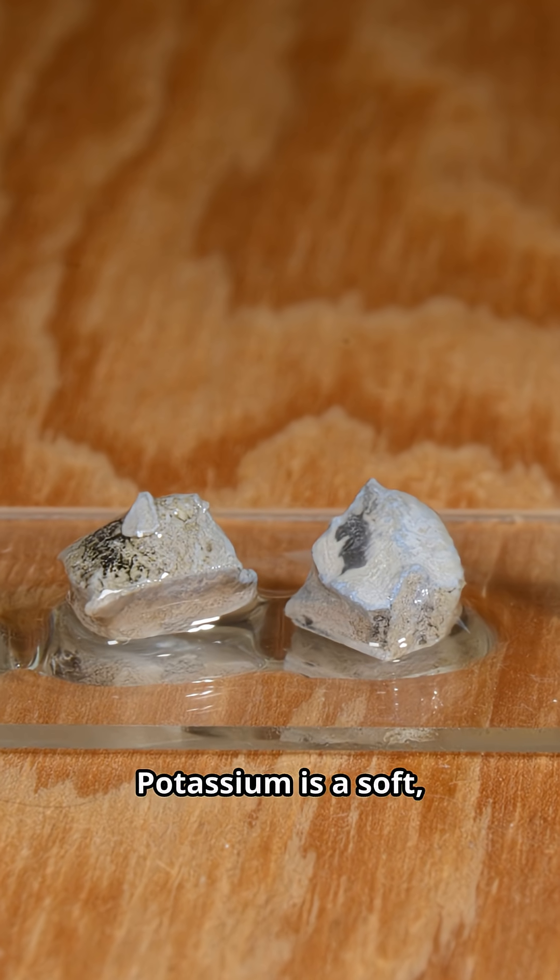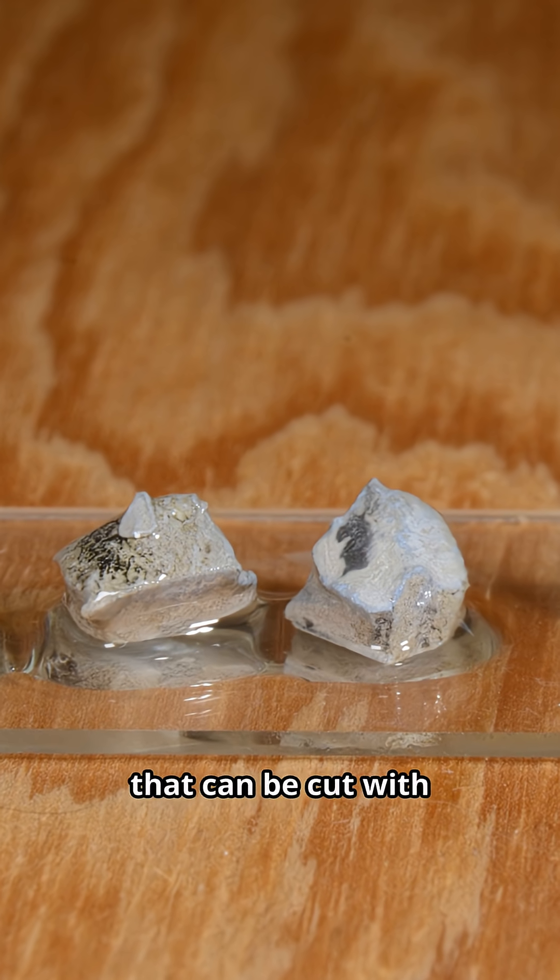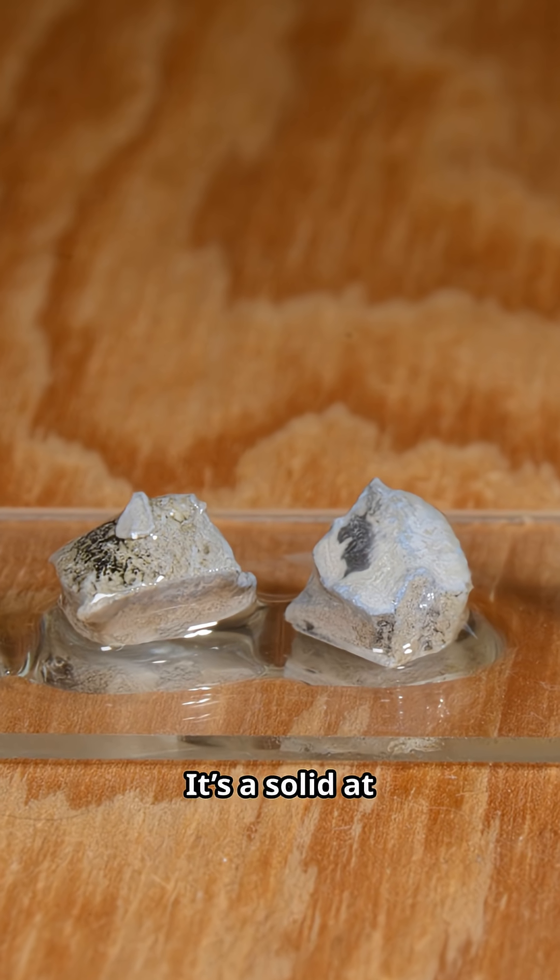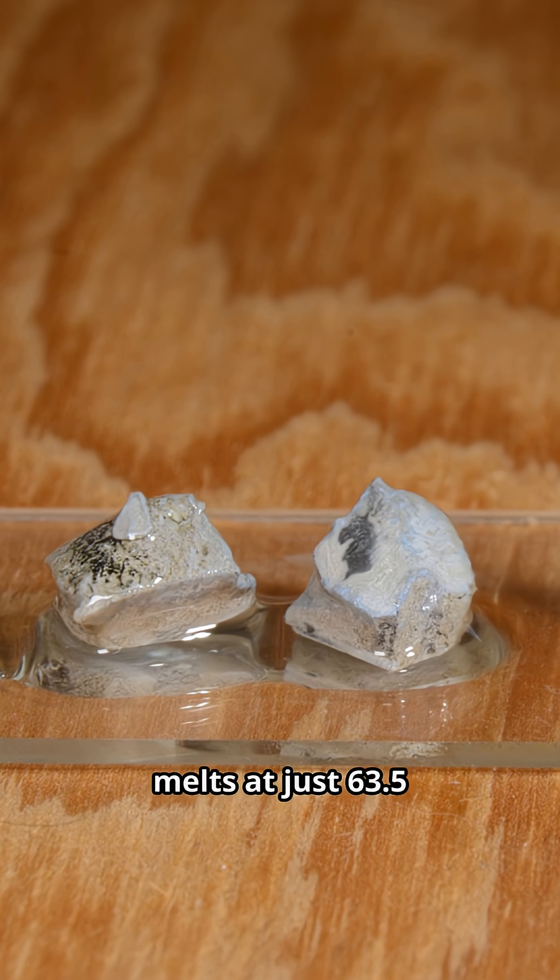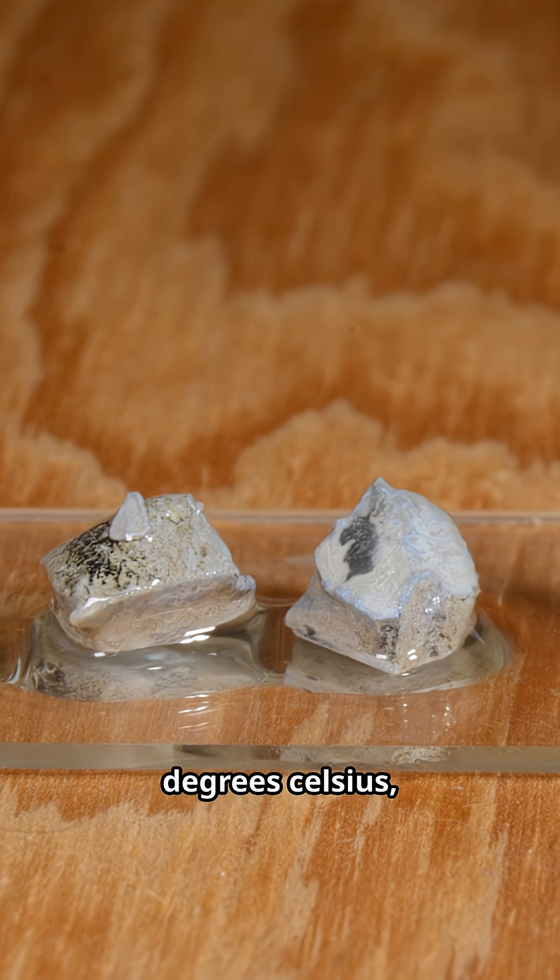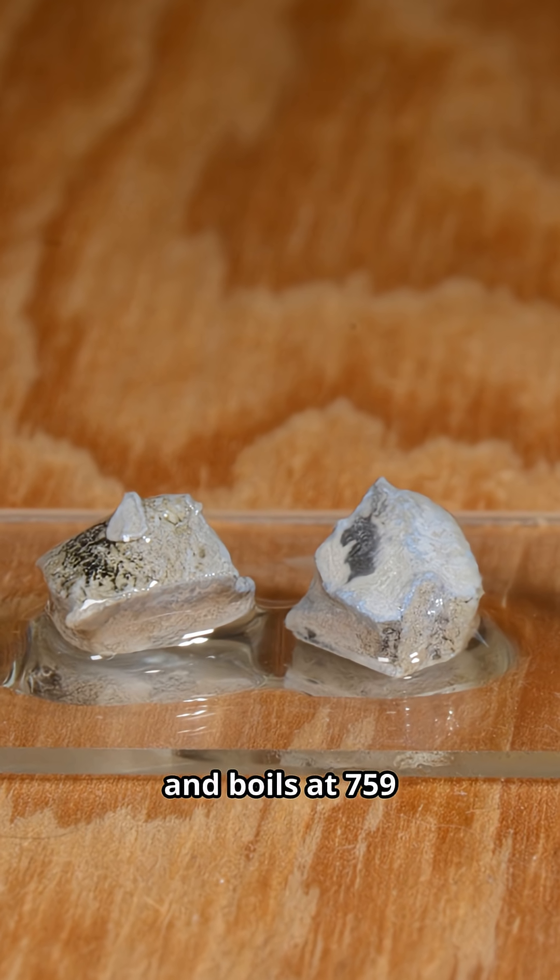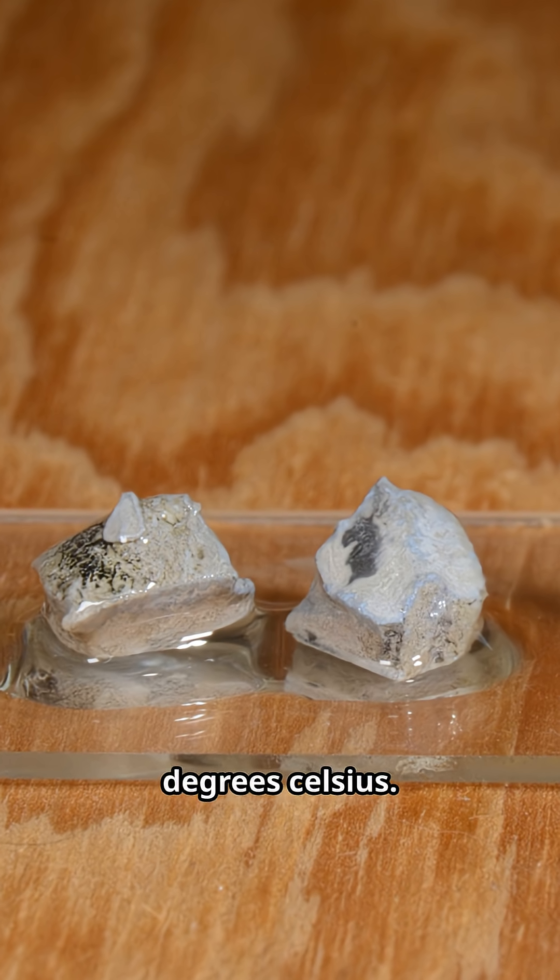Potassium is a soft, silvery white metal that can be cut with a knife. It's a solid at room temperature, melts at just 63.5 degrees Celsius and boils at 759 degrees Celsius.